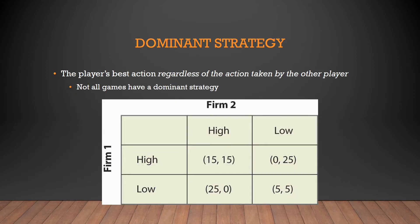The first thing is: what is a Dominant Strategy? A Dominant Strategy is the player's best action regardless of the action taken by the other player. Not all games have a Dominant Strategy. This is where one player, or both — they can both have one too — has a best action regardless of what the other firm chooses to do. So we have Firm 1 and Firm 2.